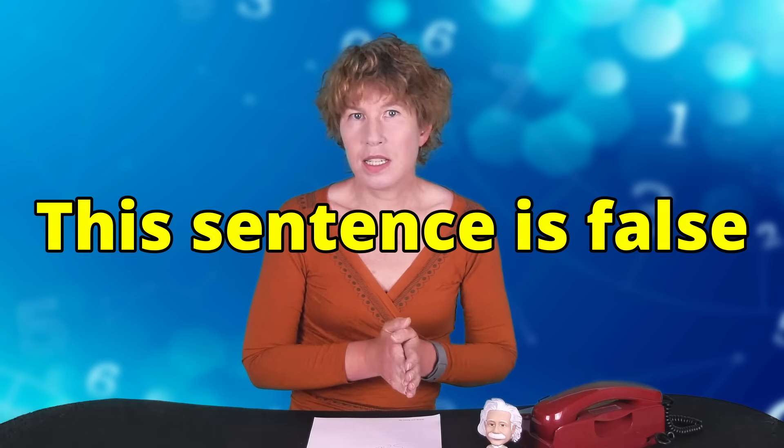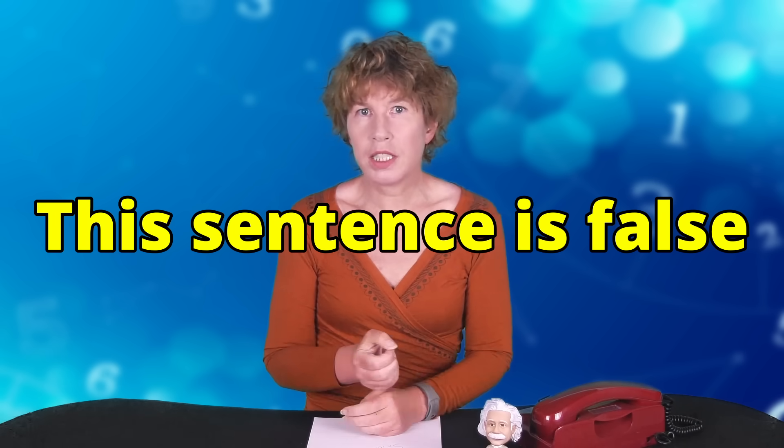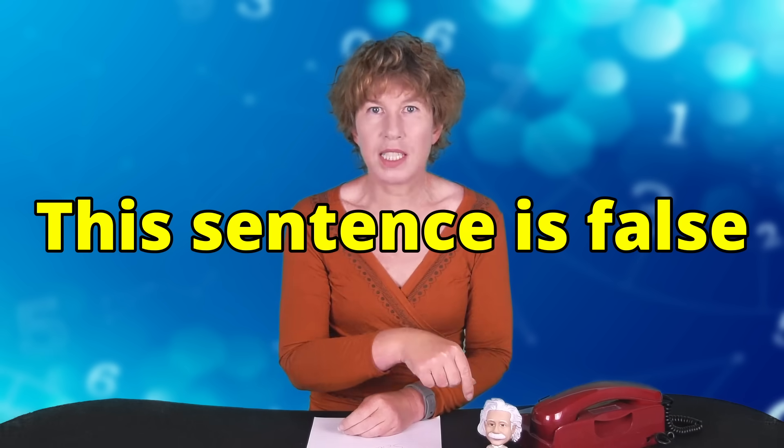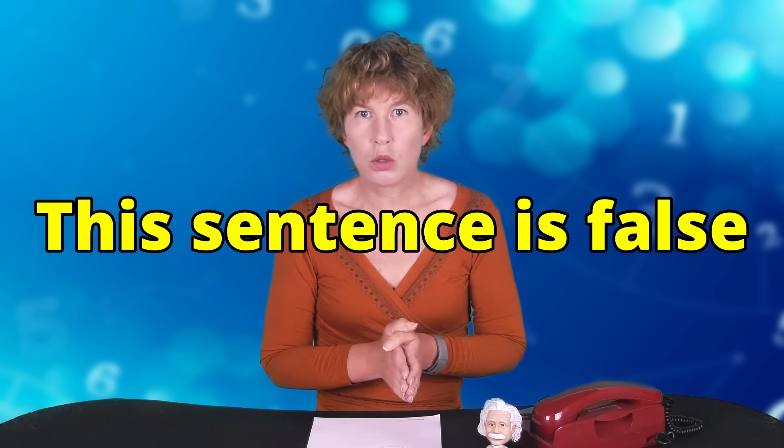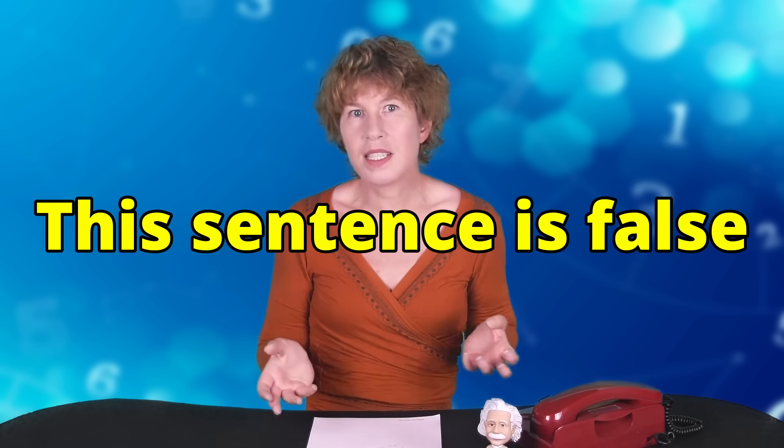7. Metalogical contradictions. This sentence is false. It's a classical example of a contradiction caused by using a language to make statements about itself. If the sentence is false, then it's true. And if it's true, then it's false. So what is it?